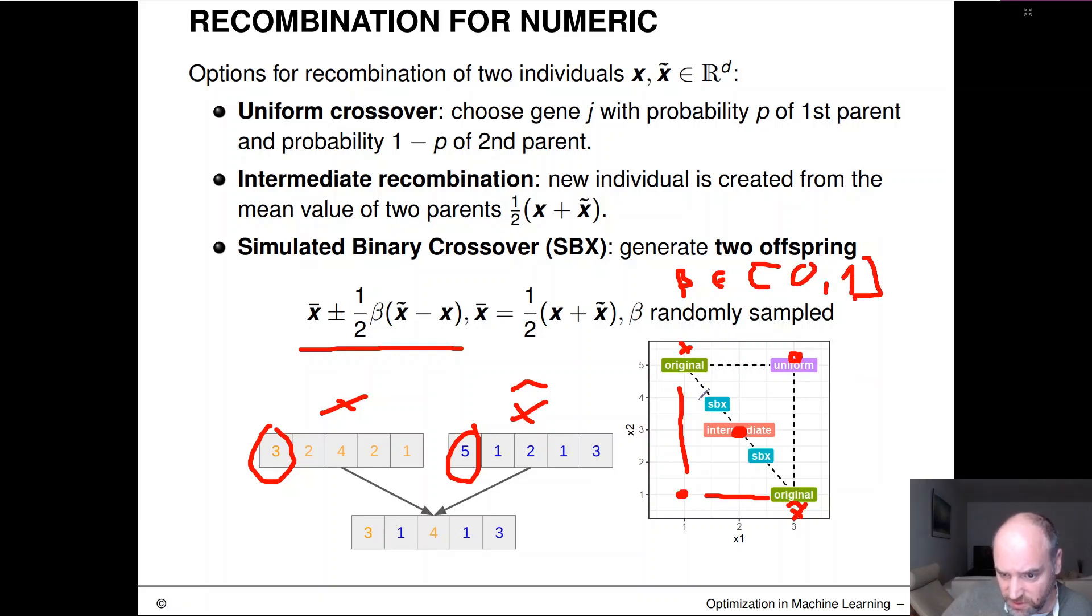Which generates then a point here continuously distributed, uniformly distributed on this connecting line and resulting in a convex combination between the two original values.